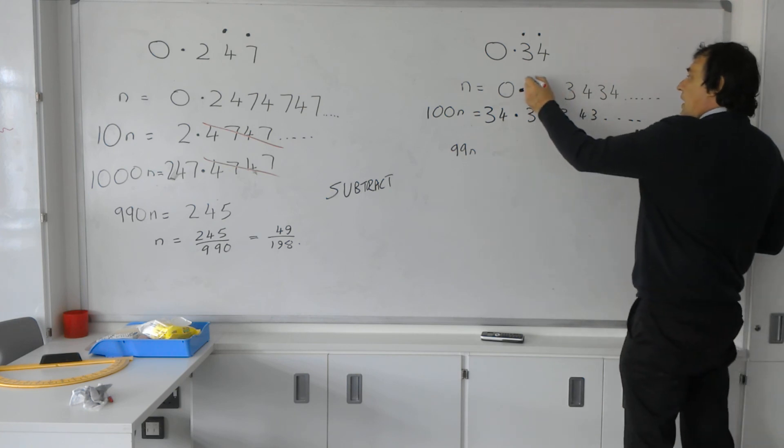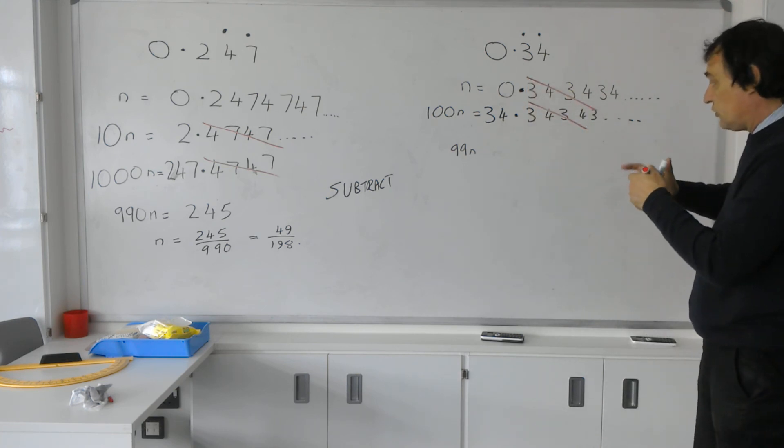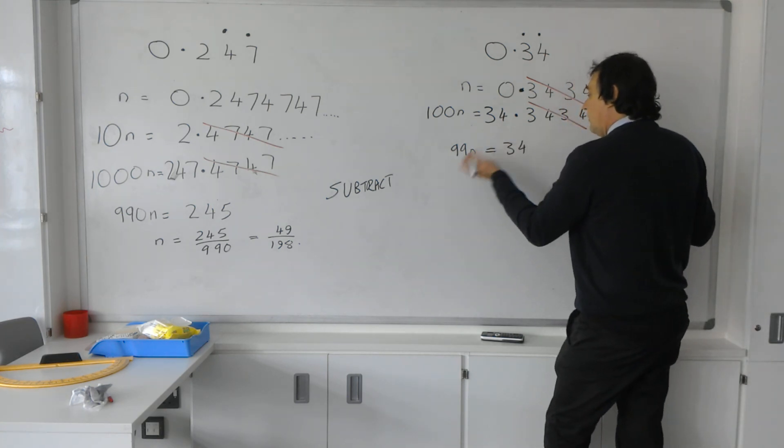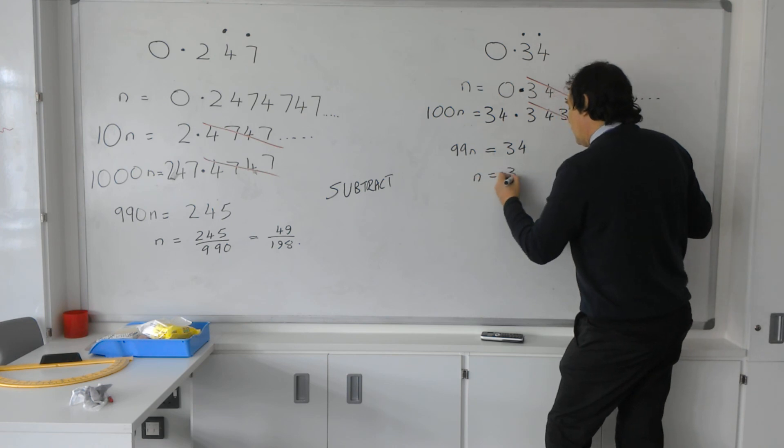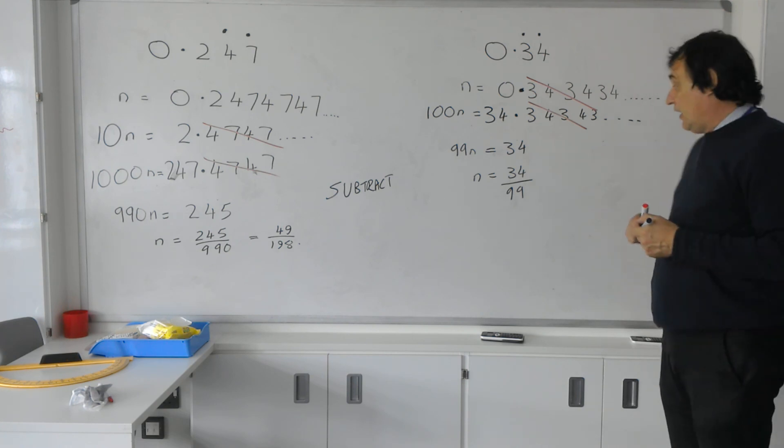Remembering that now we've got the recurring sequence identical after the decimal point, which is why we do it, we're just left with the numbers. That's therefore equal to 34. So N equals 34 over 99, which doesn't have a common factor, and you just leave it as it is.